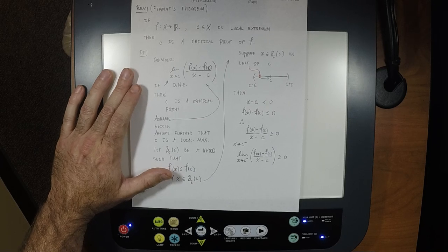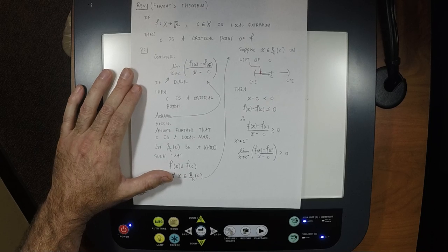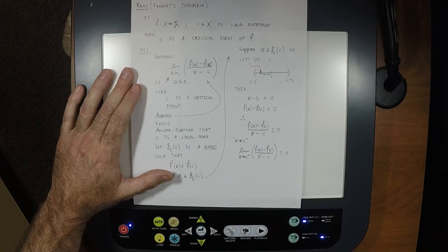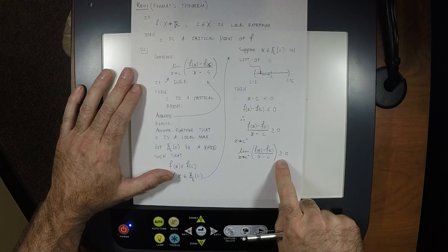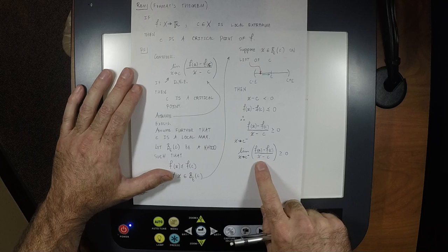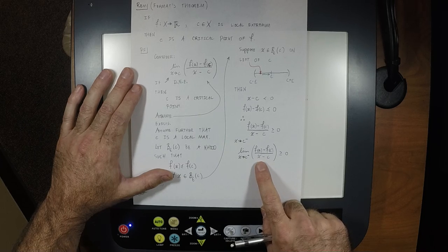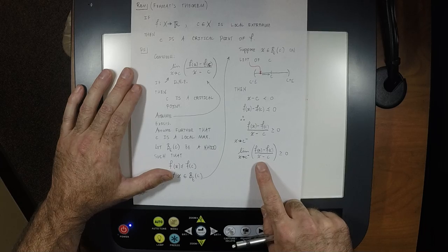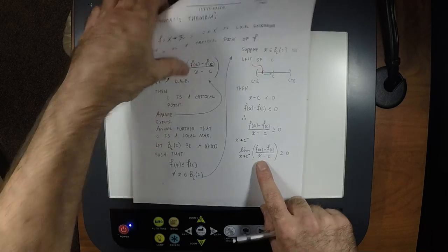Can you speculate what comes next? I'll show that the limit from the right must be non-positive. We've shown the left limit is non-negative; the right limit will be non-positive. Since the limit must exist, the only number that is both non-negative and non-positive is zero. Let's finish it.